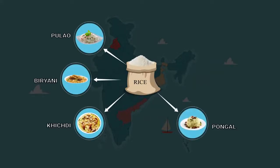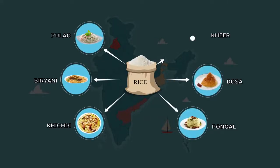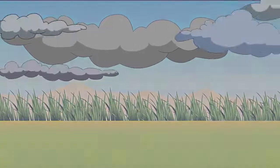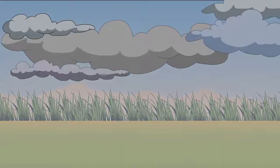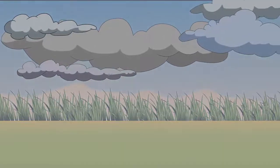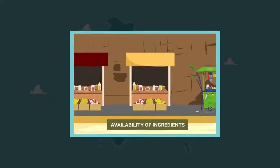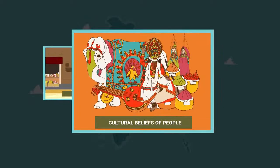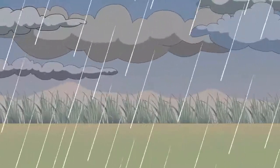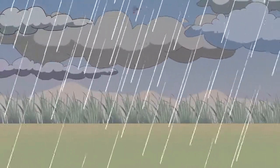Rice is used for cooking pulao, biryani, khichdi, pongal, dosa, kheer, etc. What are the factors which affect the kind of food eaten in a region? It depends on the weather of that region, availability of ingredients, and the cultural beliefs of the people.